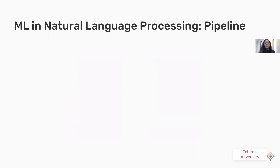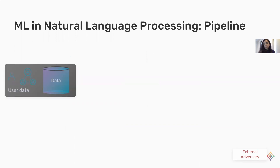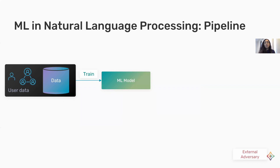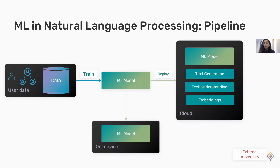Now we will discuss the pipeline of applying machine learning algorithms for NLP. First, user data is collected. Then this data is used to train a machine learning model, for example a deep learning language model. Once the model is trained, it is deployed on the cloud with remote access or locally on the user device. It could be used for different purposes such as text generation, text understanding, or to create embeddings.